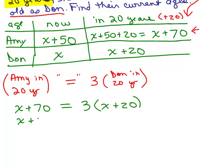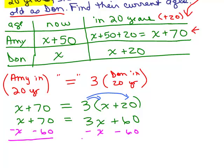Let's solve this. We need to do the distributive property on the right hand side. I'm going to distribute my 3 to get 3X plus 60. I'm going to subtract X from both sides and subtract 60 from both sides. So I have 10 equals 2X. Dividing by 2, we get 5 equals X or X equals 5.